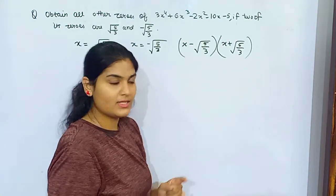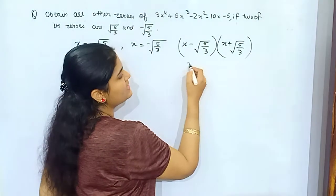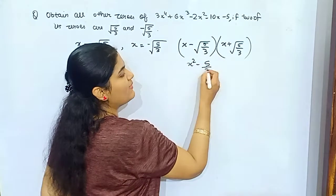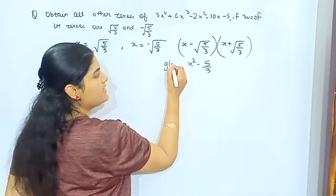This is (a - b)(a + b), that means x² - a² - b². So (√5/3)² is 5/3, right? Now this is your divisor, this is your dividend. You know how to divide it. You will get two more roots from that.